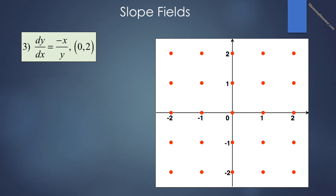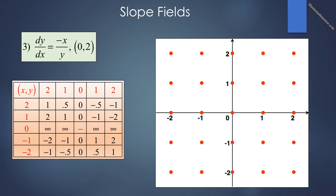In number 3, we have the more difficult differential equation dy/dx = -x/y. We'd like to create a slope field and then come up with the approximate solution going through the point (0, 2). Since dy/dx is equal to a fraction, we see that when x = 0, meaning along the y-axis, dy/dx = 0, meaning the slope is horizontal. When y = 0 along the x-axis, then dy/dx is undefined — we will say it's infinite. At the point (0, 0), dy/dx = 0/0, and we will just say that is undefined.